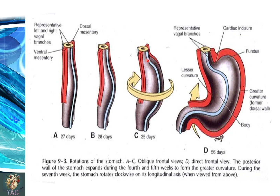Similarly, the left vagus nerve, which initially supplies the left border of the stomach, will later on supply the anterior part of the stomach. Because of the differential growth rate, the lesser curvature and greater curvature of the stomach are forming; also the cardiac end is visible, the cardiac incisura is forming, this is the body of the stomach, and this is the pyloric end.